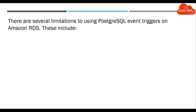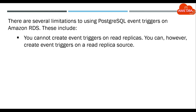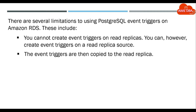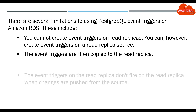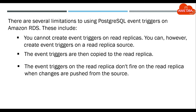There are several limitations to using PostgreSQL event triggers on Amazon RDS. You cannot create event triggers on read replicas. You can, however, create event triggers on a read replica source. The event triggers are then copied to the read replica. The event triggers on the read replica don't fire on the read replica when changes are pushed from the source.